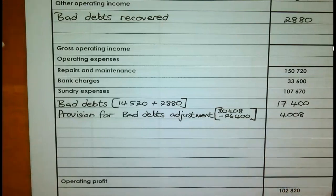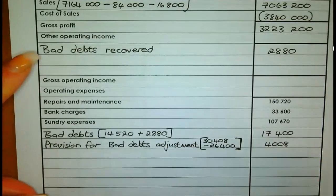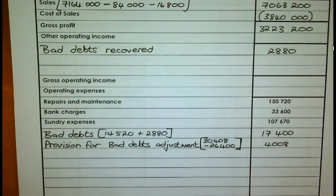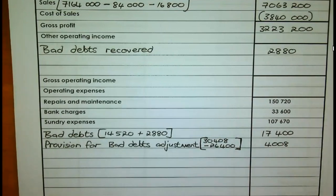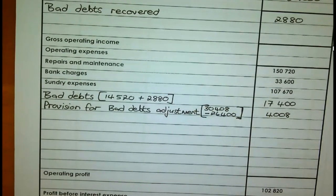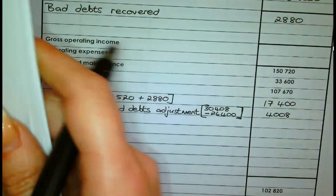Looking at the adjustments done so far, these are easy to moderate marks you can earn. Many of these adjustments we've been doing since Grade 10 and Grade 11. Remind yourself: I know this, I can do this — I was able to do it in earlier grades, and I can do it again.